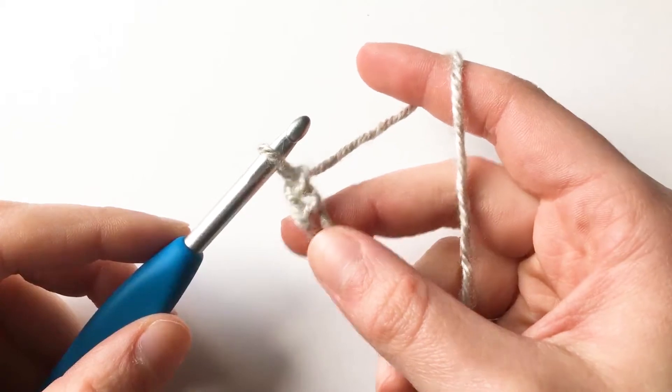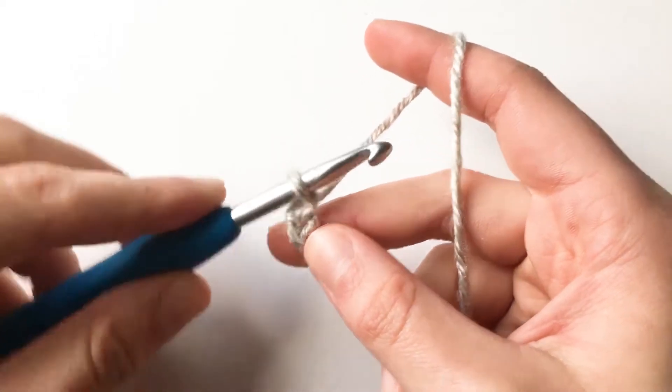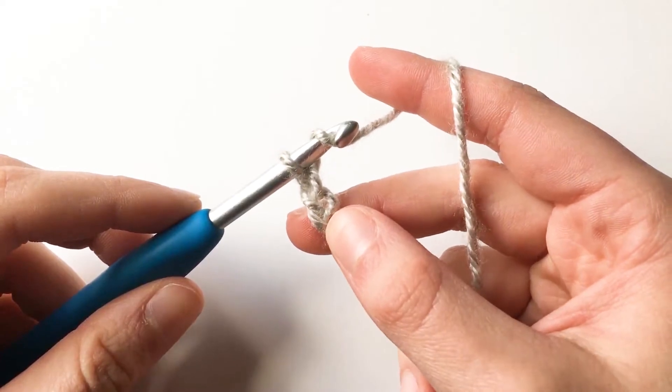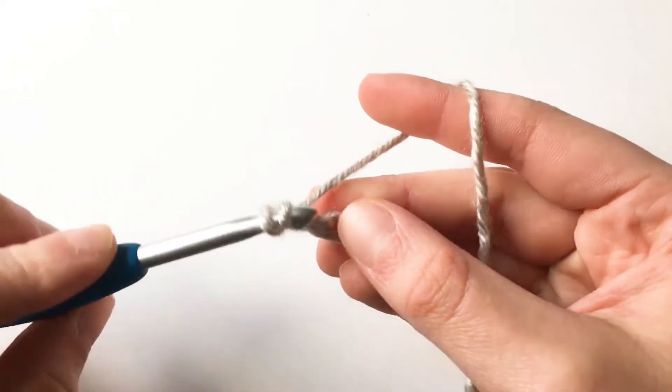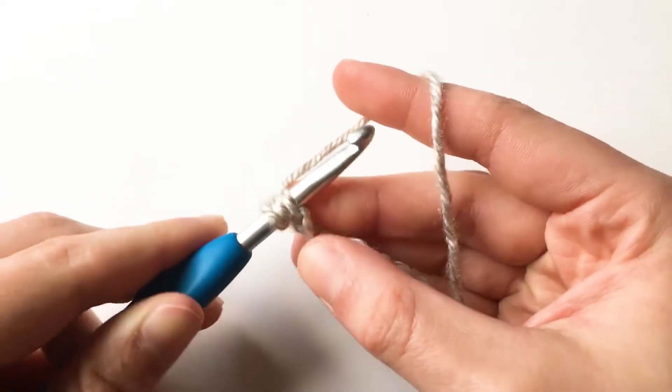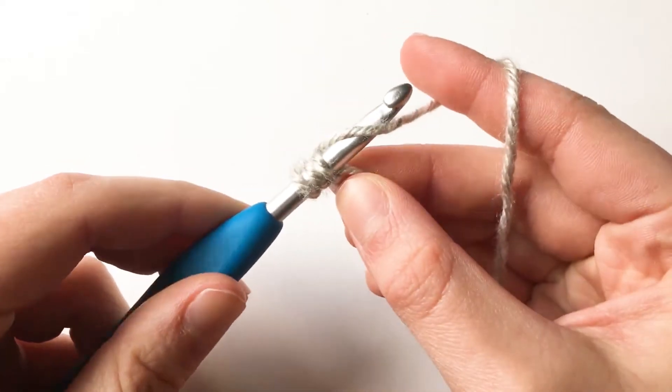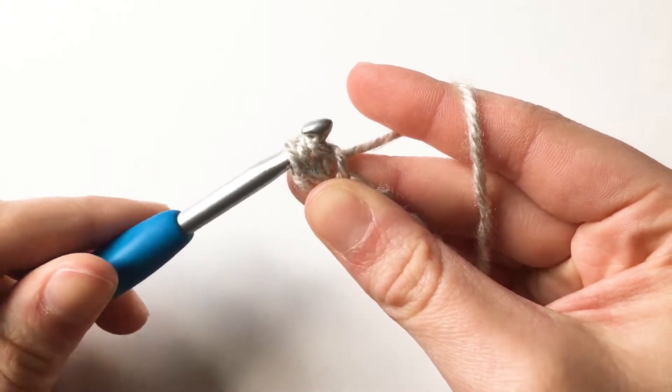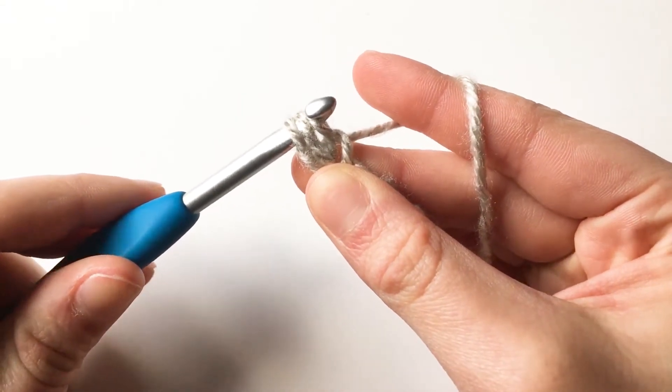To begin row one, yarn over and in that second chain from your hook, insert your hook. Then yarn over and pull back through that stitch and pull through the next loop on your hook.